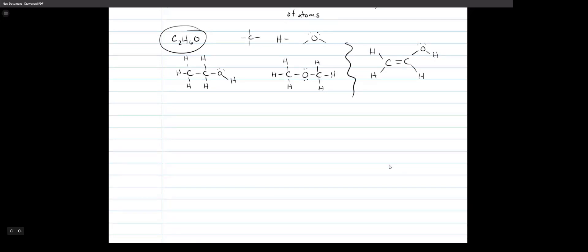Let's do another one without double bonds: C5H12. From experience I know there are three isomers. The easiest way to start is with all five carbons in a straight line — we call that a chain. So we have one, two, three, four, five carbons.